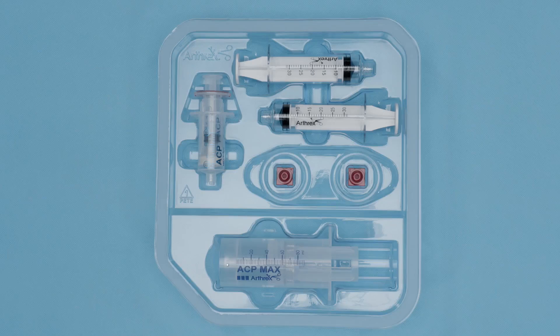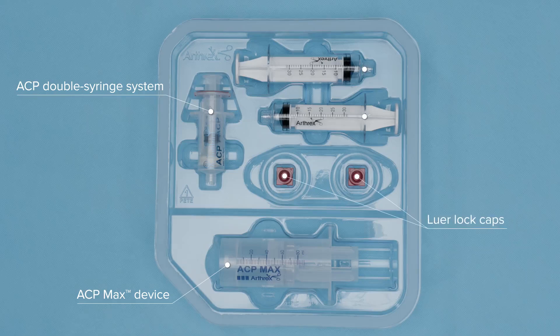Your ACP Max inner tray contains the ACP Max device, the double barrel ACP syringes, two lure lock caps, and two 30 cc syringes.